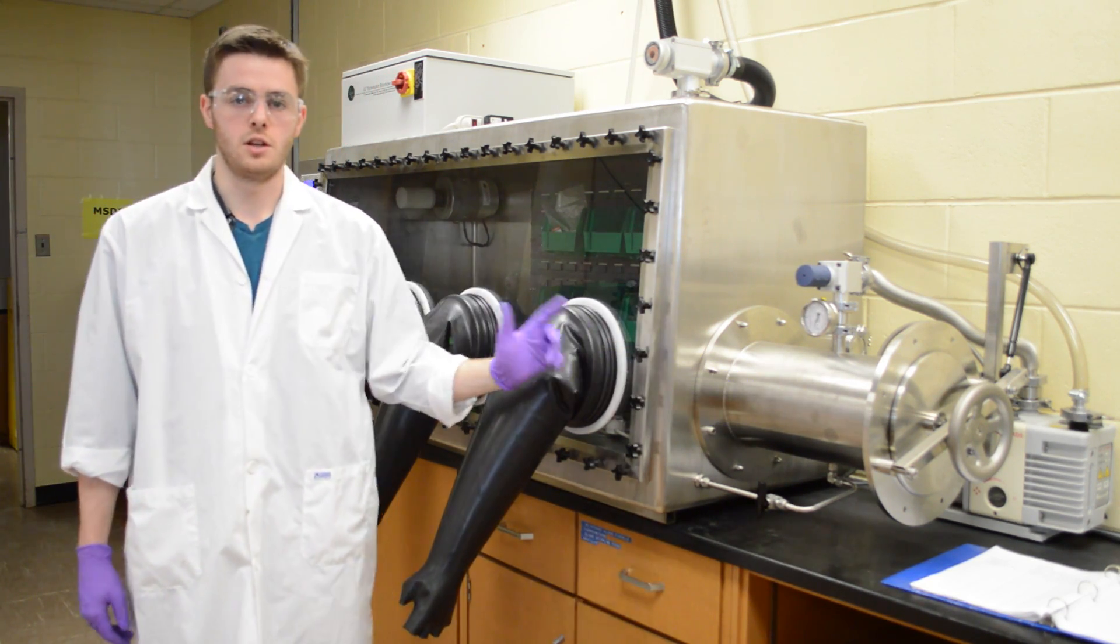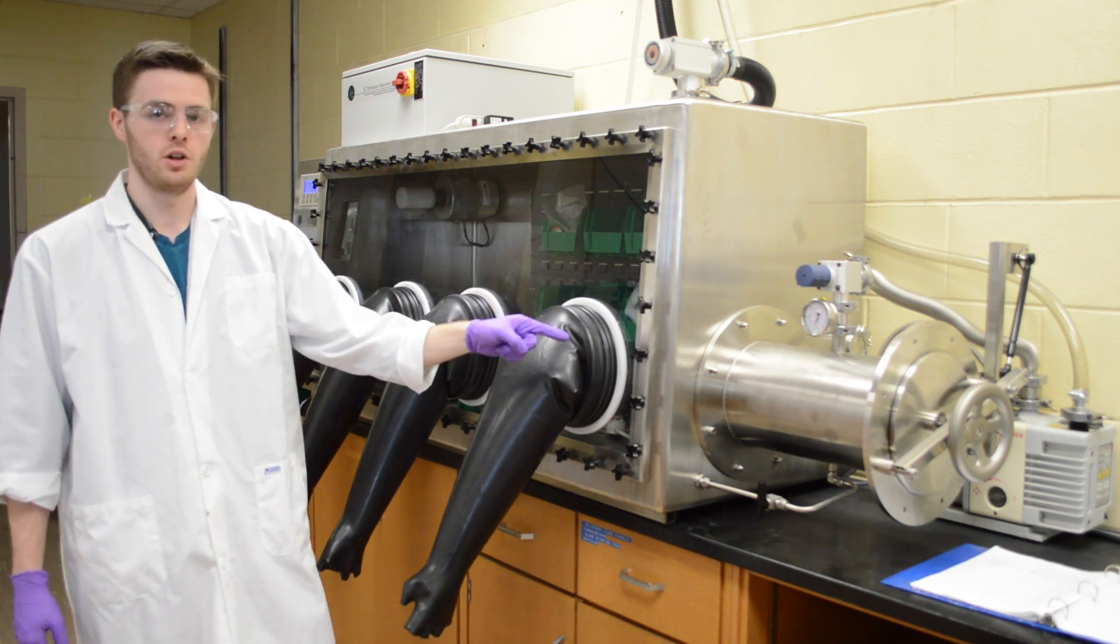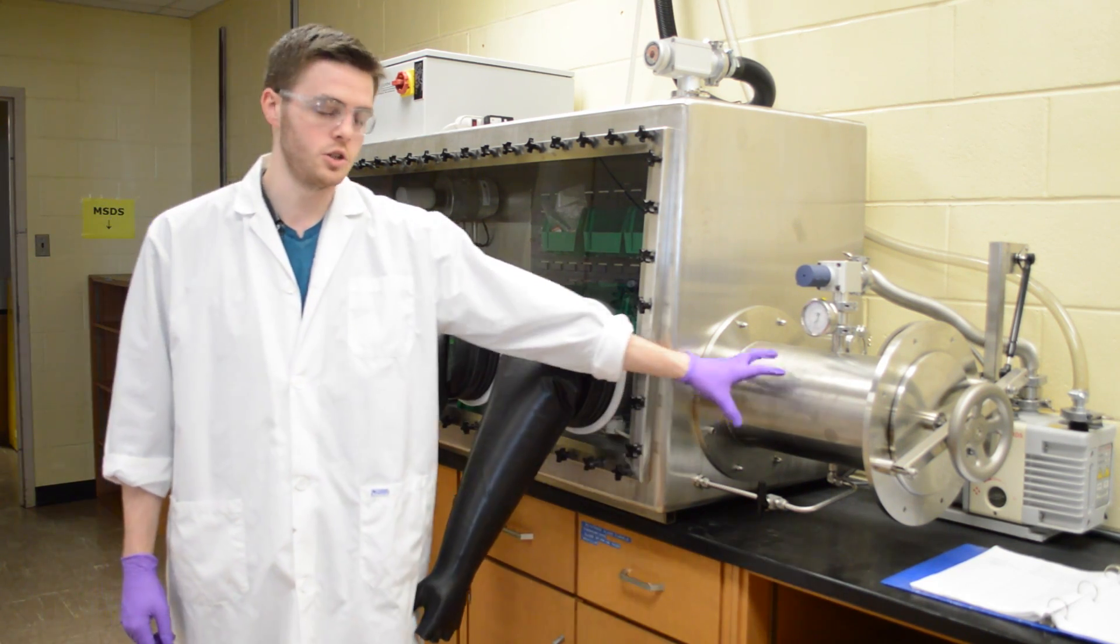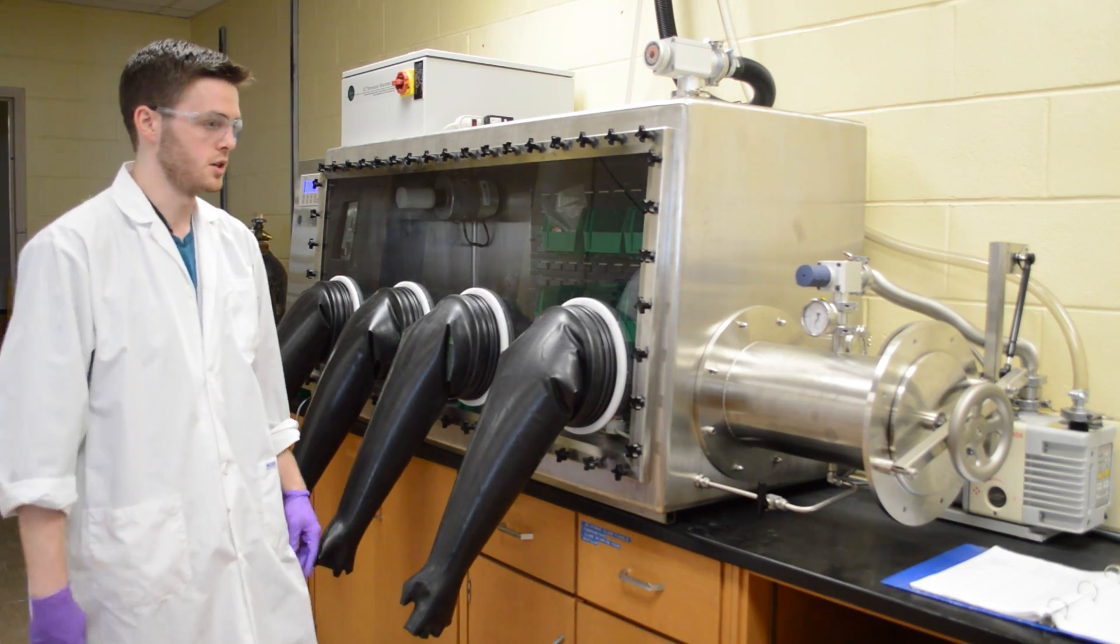We'll use this anti-chamber to bring things in and out of the glove box. This supplies a vacuum as well as being able to fill its atmosphere with just nitrogen alone, so that way we can use new things inside.